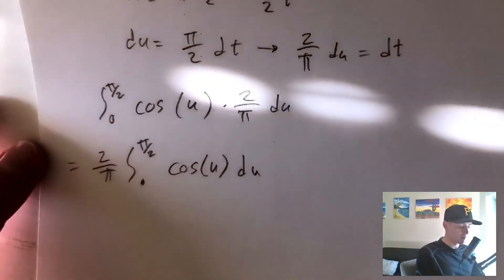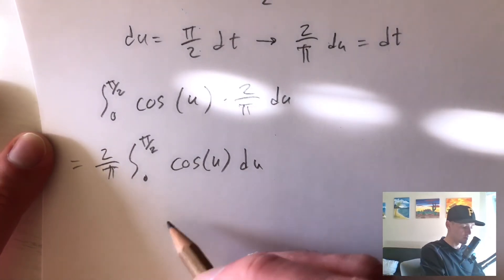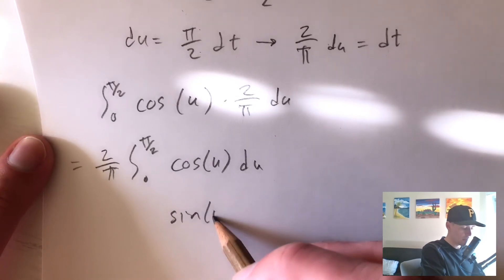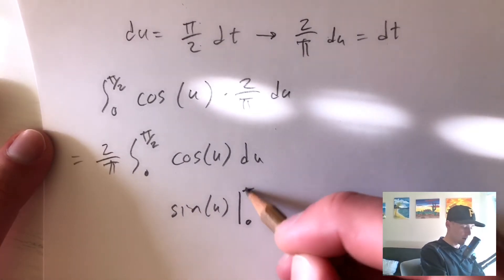So now we can integrate this function, which the antiderivative of cosine u with respect to u is going to be sine of u. And we need to evaluate this from 0 to pi over 2.